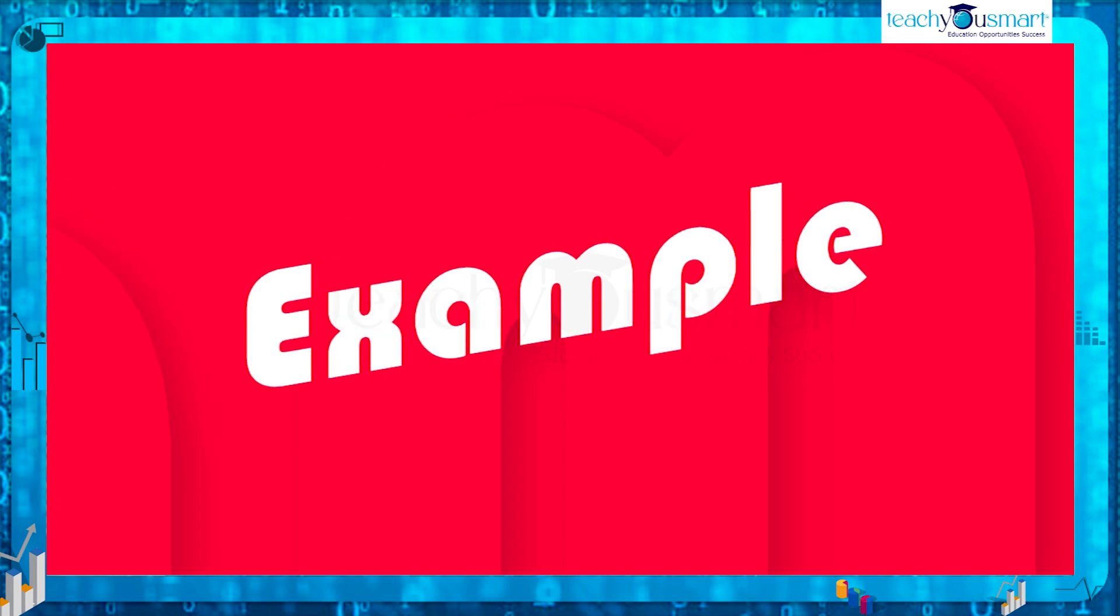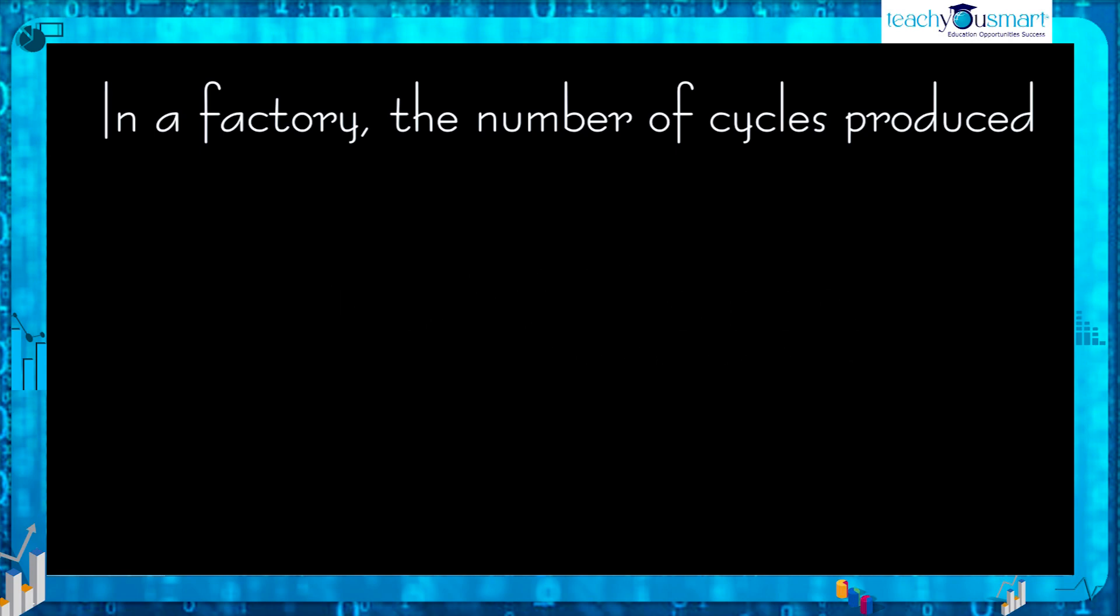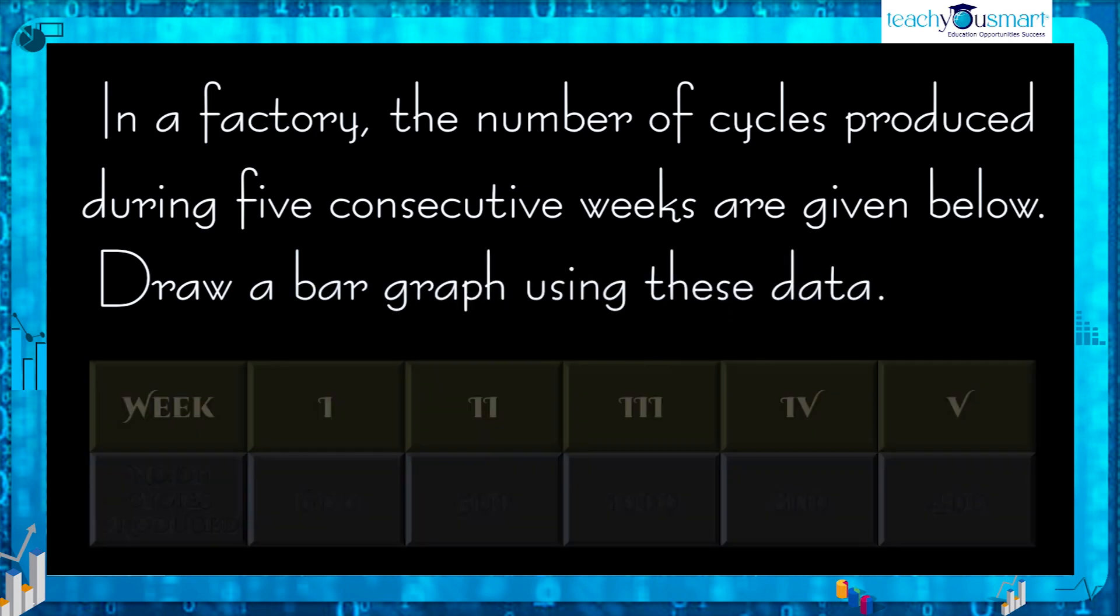Let's do another example. In a factory the number of cycles produced during five consecutive weeks are given below. Draw a bar graph using these data.